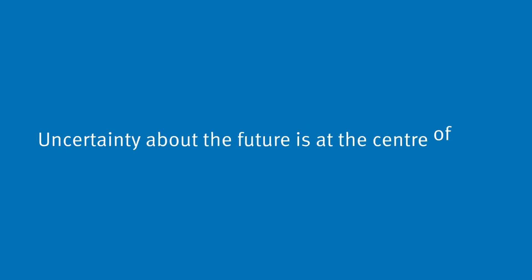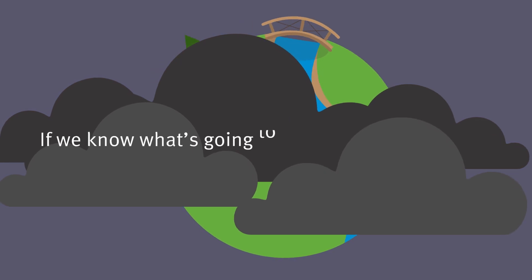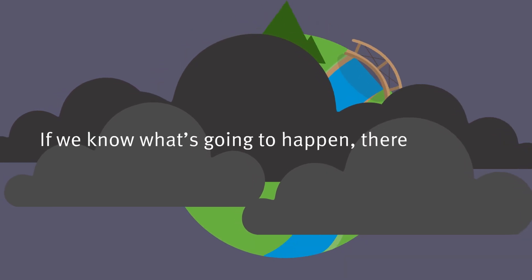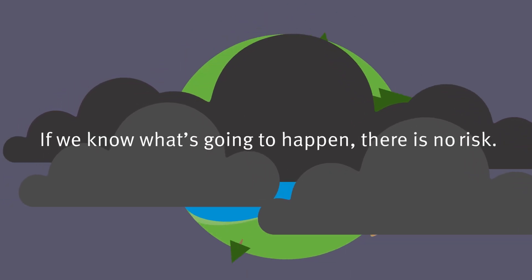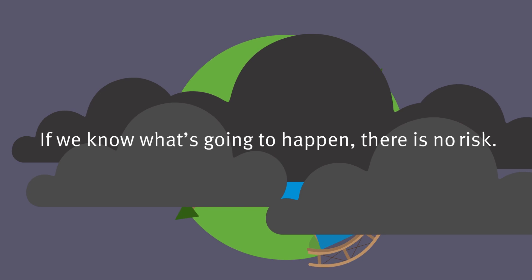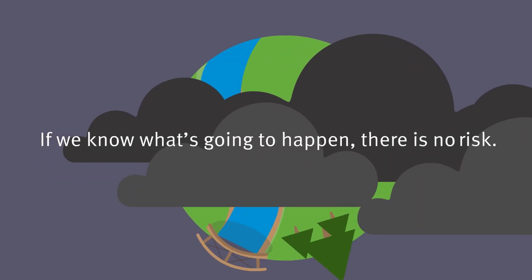Uncertainty about the future is at the centre of risk. If we always knew exactly what was going to happen, there wouldn't be any risk. Because we don't, we can't be certain of anything.